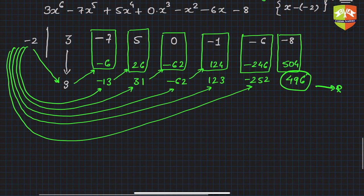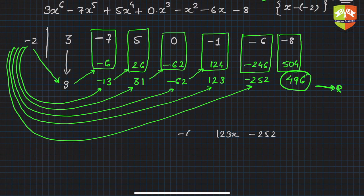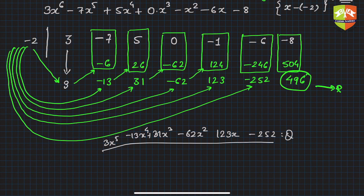The last term, 496, is the remainder. The quotient is formed by attaching the coefficients back with descending powers: 3x⁵ minus 13x⁴ plus 31x³ minus 62x² plus 123x minus 252. So the quotient is that expression and the remainder is 496. This is called synthetic division — with enough practice, you can do it mentally.